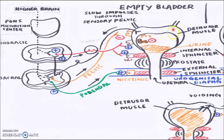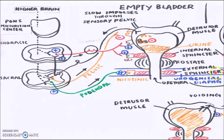Which parts actually control the storing and voiding of the urine? This is the bladder. The storing and elimination of urine is controlled by a muscle called the detrusor muscle, the internal sphincter, the external sphincter, and the urethra. As you can see, the urethra is quite long in length — this is the male urinary system.